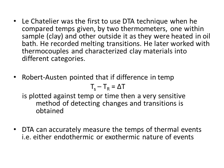Le Chatelier was the first to use the DTA technique when he compared temperatures given by two thermometers. He was experimenting with clay as a sample, using two thermometers — one inside the sample and one outside — both being heated in an oil bath. He recorded melting transitions and later worked with thermocouples to characterize clay materials into different categories. Robert Austin then pointed out that if the difference in temperature between sample and reference is plotted against temperature or time, a very sensitive method of detecting changes and transitions is obtained.